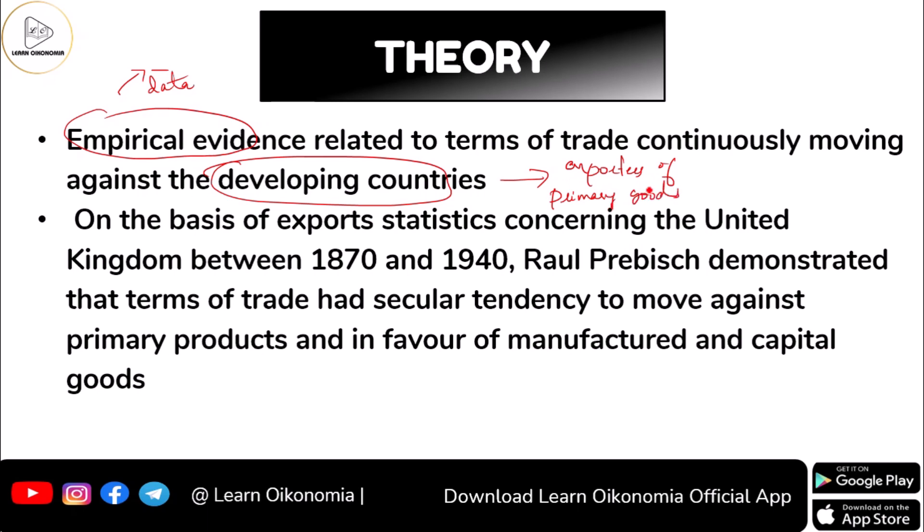This was something that happened continuously. Based on export statistics related to the UK between the period 1870 and 1940, Prebisch demonstrated that the terms of trade had a secular tendency to move against primary products while moving in favor of manufactured goods or capital goods.